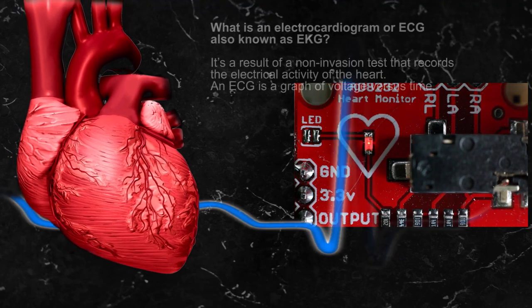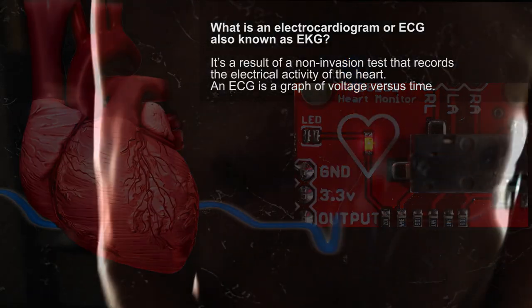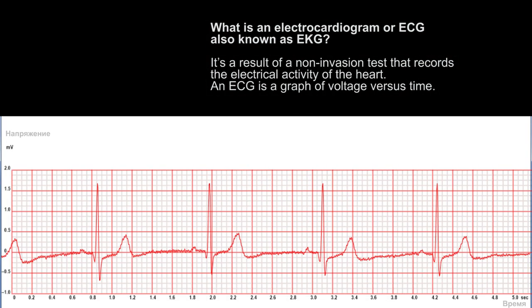What is an electrocardiogram or ECG, also known as EKG, abbreviated from the German word electrocardiogram? It is a result of a non-invasion test that records the electrical activity of the heart. An ECG is a graph of voltage versus time.